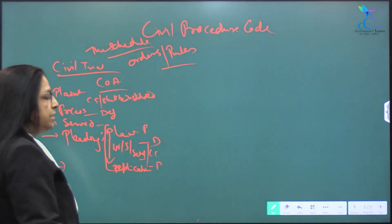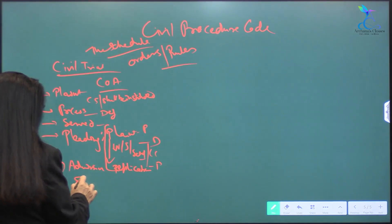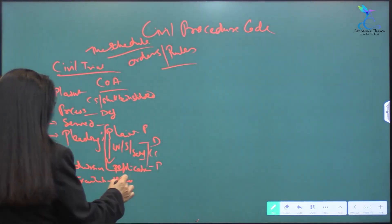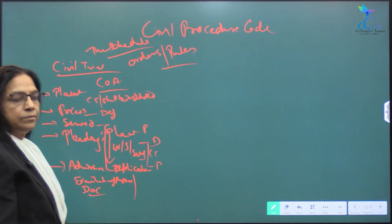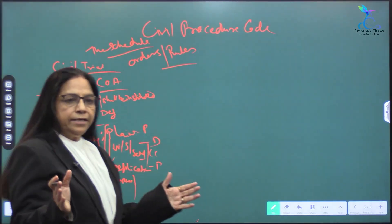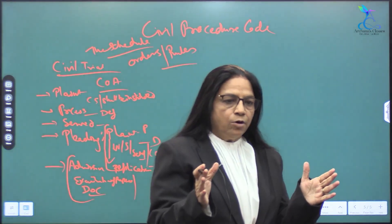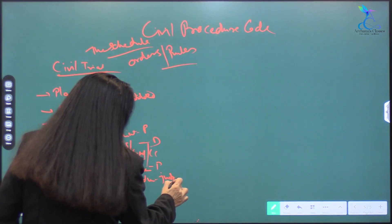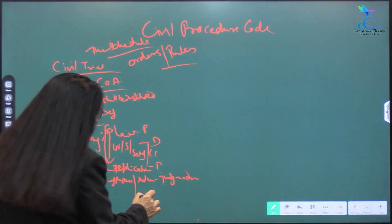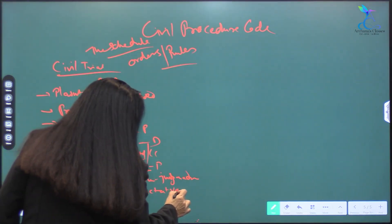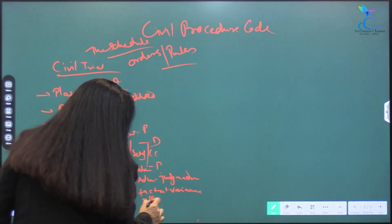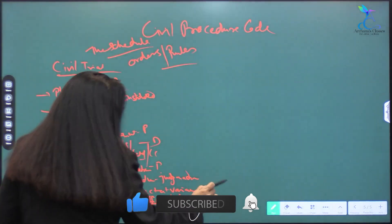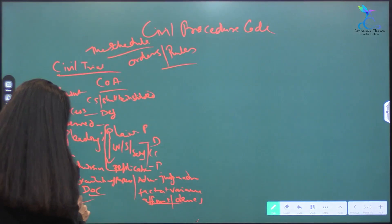and any replication if the plaintiff wants to file to counter the written statement. All these three things constitute pleadings. Then after the pleadings, the stage comes for admission and examination of the parties, and admission of documents. After this stage, when it is decided that some part of the pleadings of the plaintiff has been admitted, and what is disputed — on admission there would be a judgment on admission. For the issues, where one party affirms the allegations and another party denies, then on these disputed facts there would be issues to be framed.